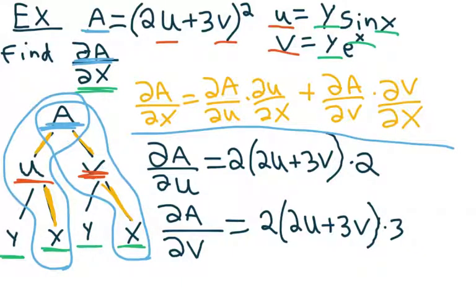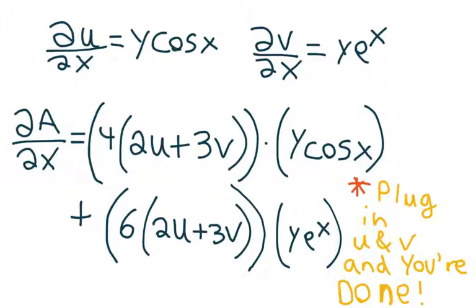Whenever we say ∂, we're talking derivatives. When we say ∂a/∂u, it's the derivative of a with respect to u. If we do the derivative of a with respect to u, we get rid of the 2 as the exponent by bringing it downwards: times (2u + 3v), then times the inner derivative with respect to u, which is just 2. We can apply the same idea for ∂a/∂v, which gives us 2(2u + 3v) times 3. We then want to do ∂u/∂x and ∂v/∂x, which gives us y·cos(x) and ye^x respectively.